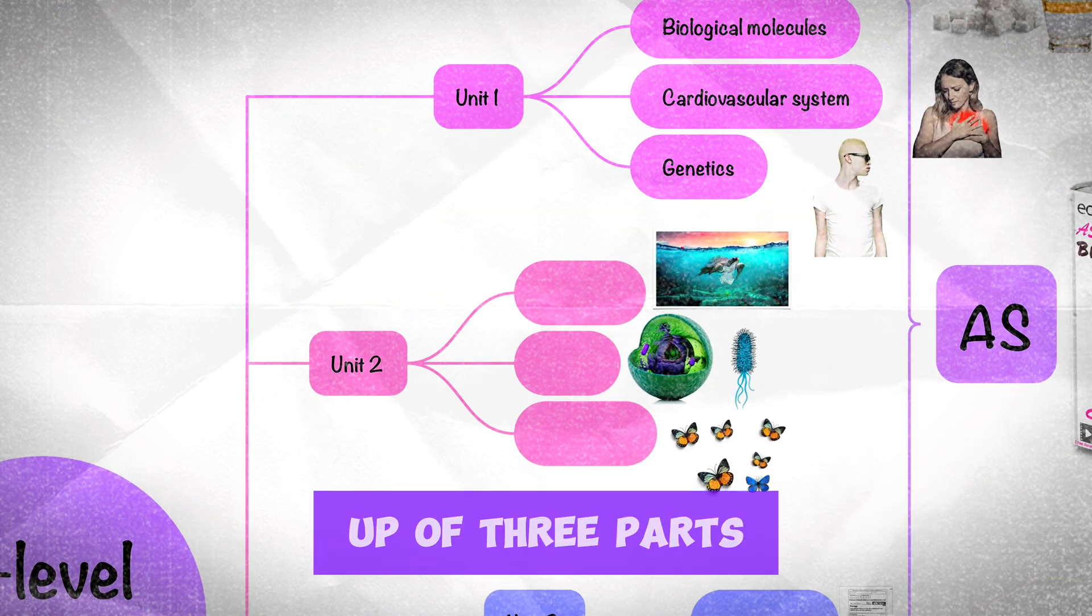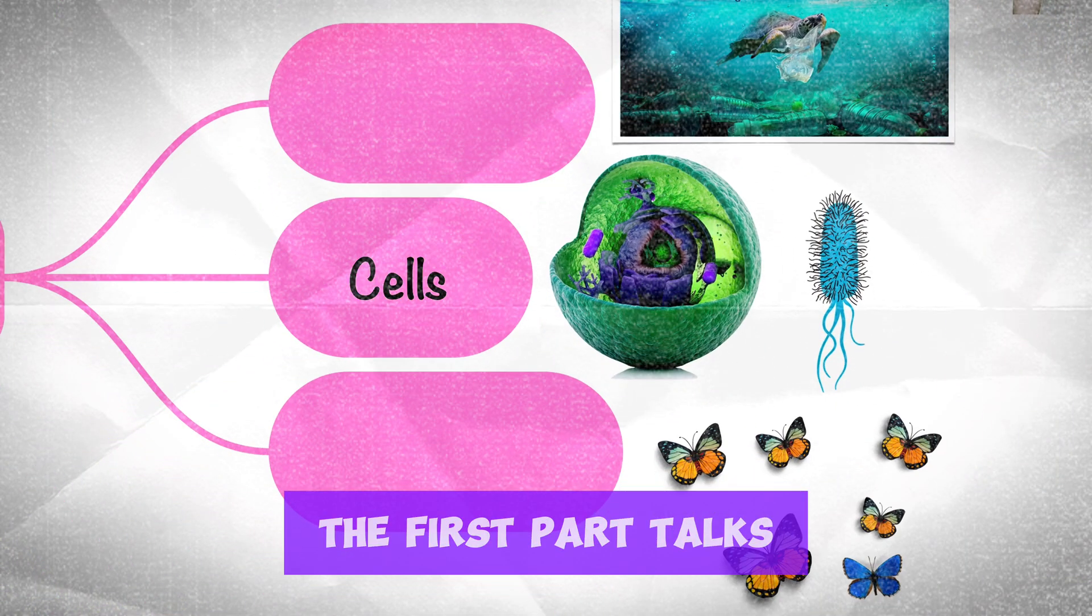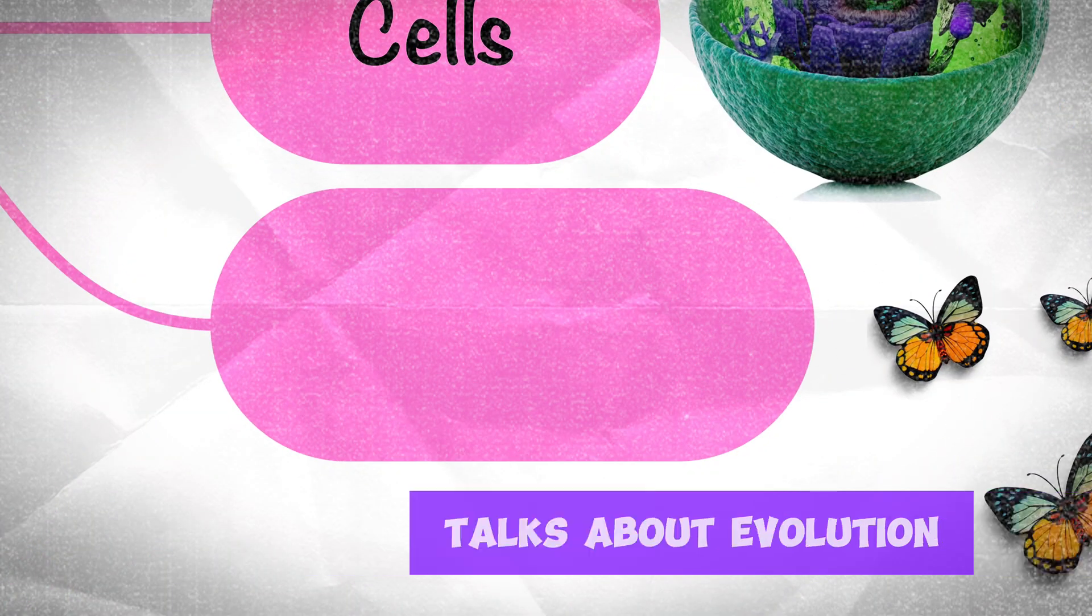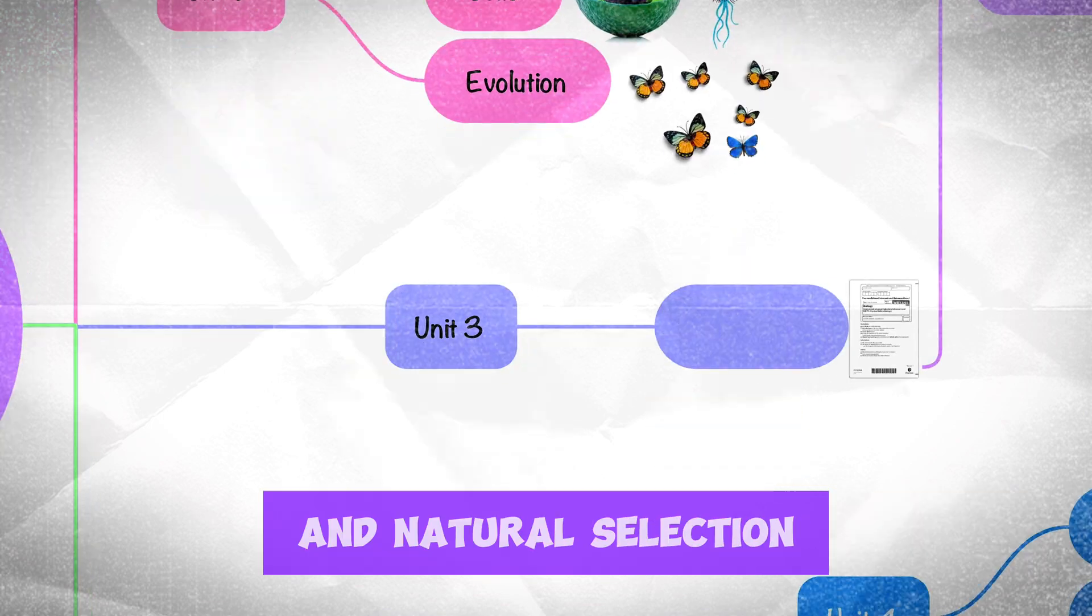Unit 2 is made up of three parts. The first part talks about cells. The second part talks about ecology and the third part talks about evolution and natural selection.